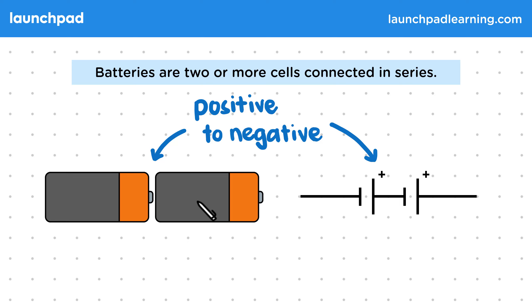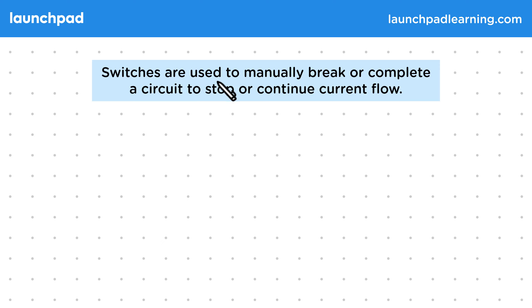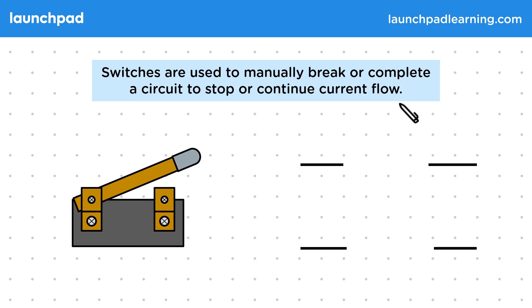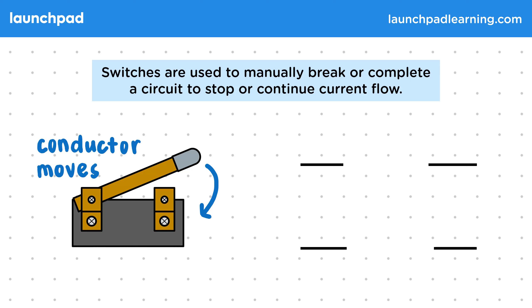Otherwise you could be penalised in an exam. Switches are used to manually break or complete a circuit to stop or continue current flow. There are many different ways of designing a switch, but they all follow the same principle — we can move a conductor to a position where it is or isn't in contact with a wire. The circuit symbol for this is two circles with a line in between. We usually draw the line only joined to one circle to represent a switch in general.